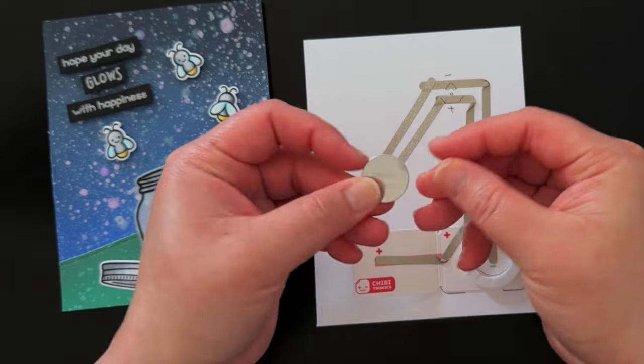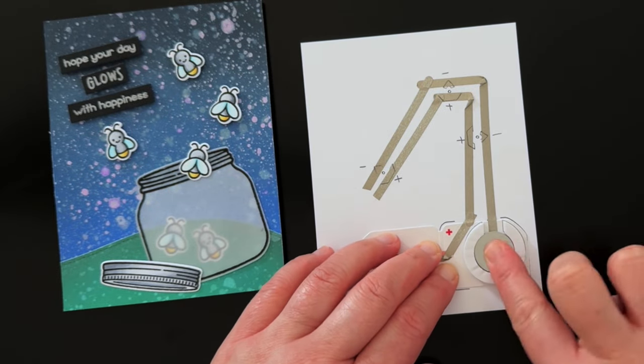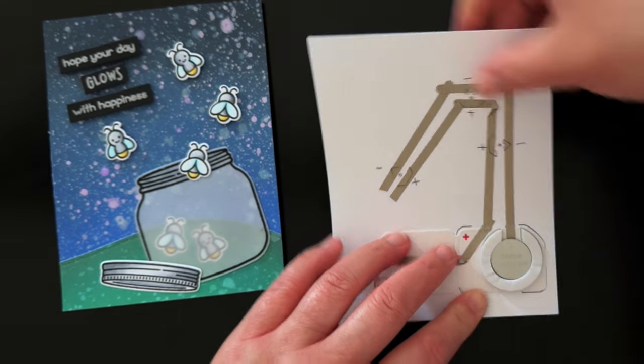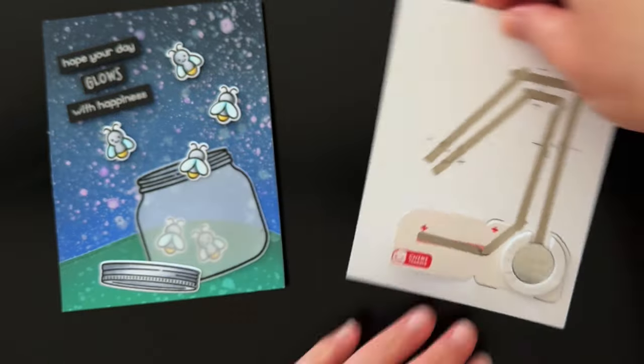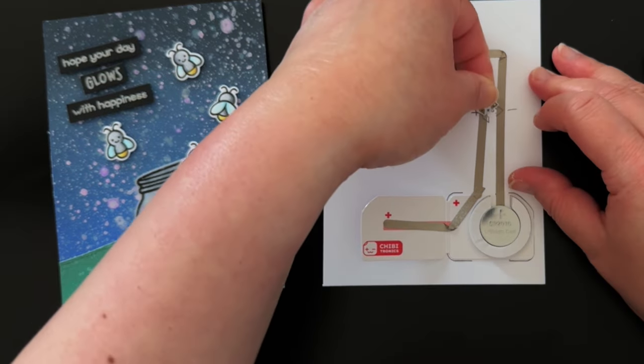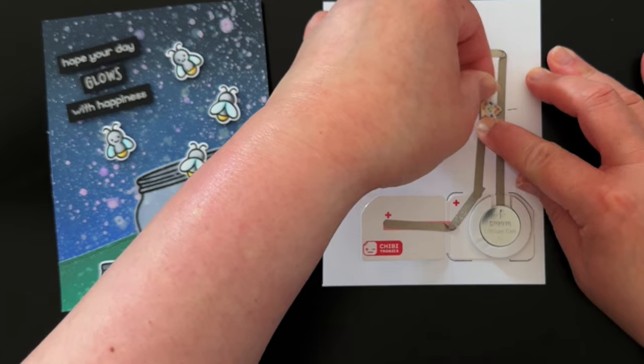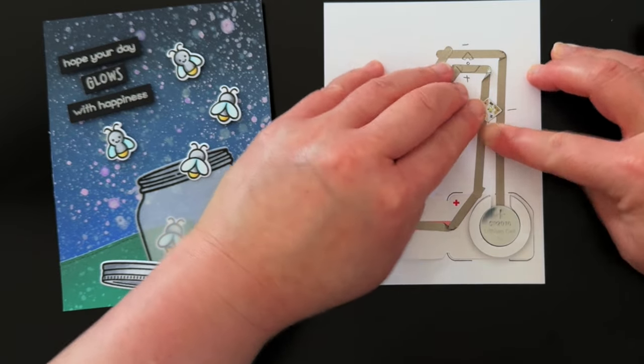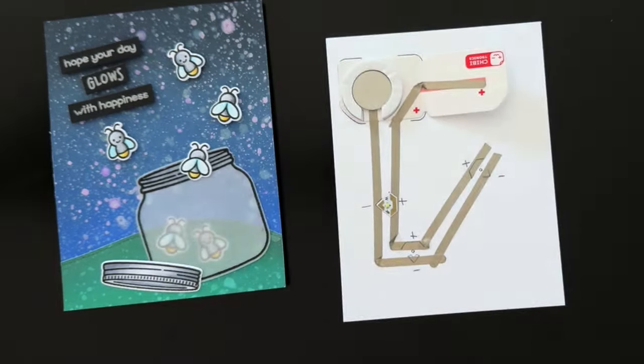Next I place my battery positive side up, which is also the side with the writing, inside my foam ring. You can see that it fits snugly inside and won't fall out easily. Then I apply my white blink animating LED stickers over the traced outlines, making sure to orient the positive and negative parts of the sticker over the correct lines of tape.